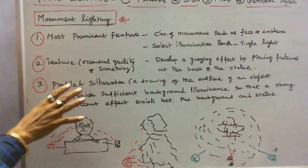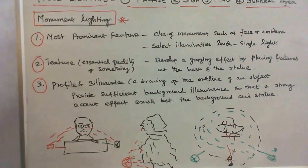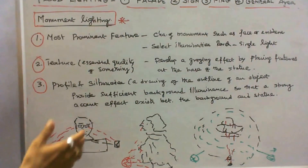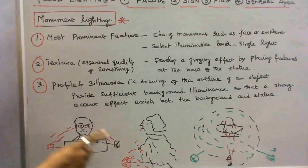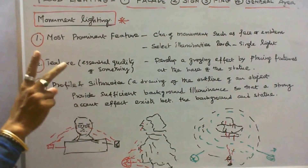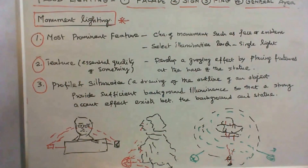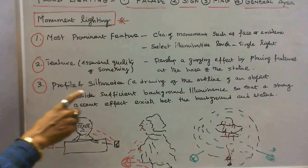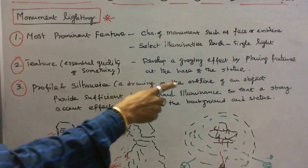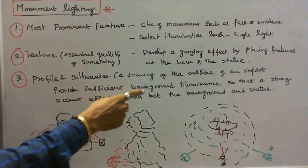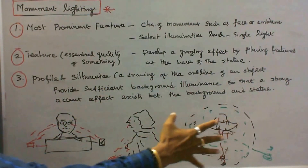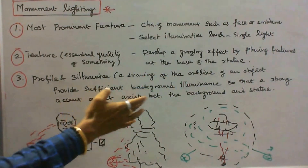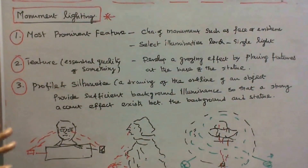The second factor is texture — the essential quality of the surface. Develop a grazing effect by placing fixtures at the base of the statue. Select a proper fixture and fix it at the base of the statue. The third factor is profile and silhouette. Silhouette means a drawing of the outline of an object. Provide sufficient background illumination so that a strong accent effect exists between the background and the statue.